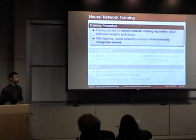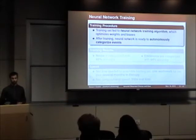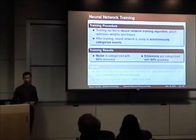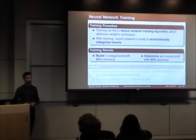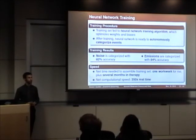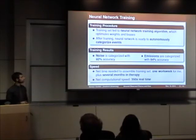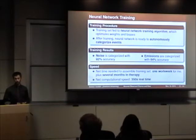After training, the neural network is ready to autonomously distinguish between noise and emissions, and between chorus and hiss. The networks are capable of categorizing noise with 92% accuracy and emissions with 84% accuracy, resulting in false positive rates of 8% and 16% respectively. After the initial assembly of the training set, which took about one work week, the net speed of the entire detector is 350 times faster than real time.